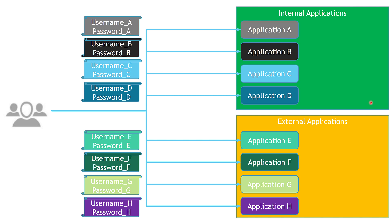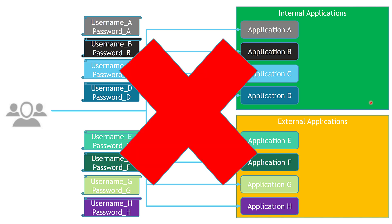The third challenge is that we have a complicated user management process. From one side, the employee will have to communicate with hundreds of different app admins to get access to an application. And from the application admin side, they have to maintain all these different requests from different employees to grant them access. These are the three challenges, and now let's see how the Federated Identity Pattern can resolve them.